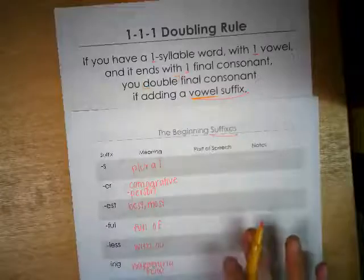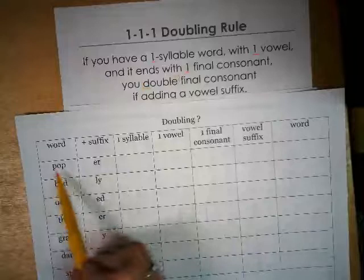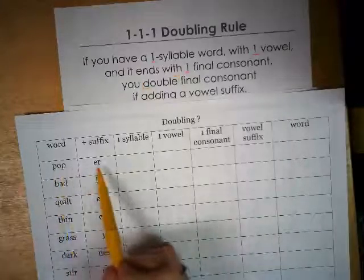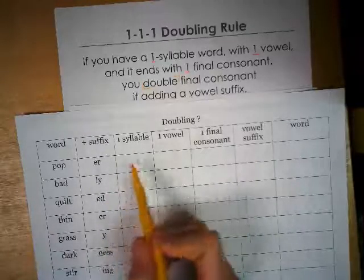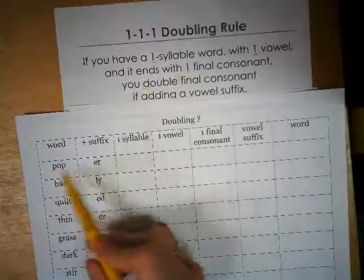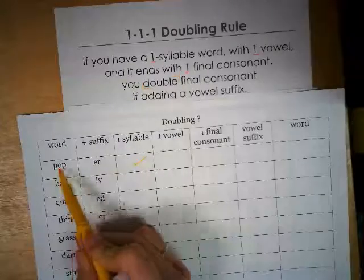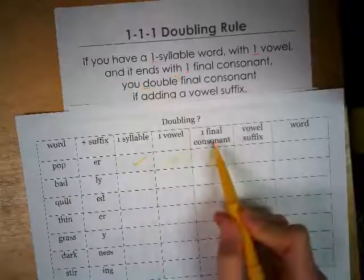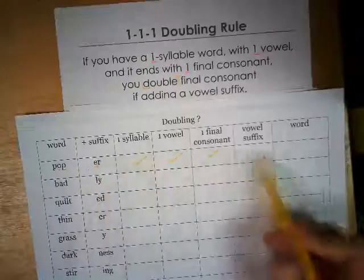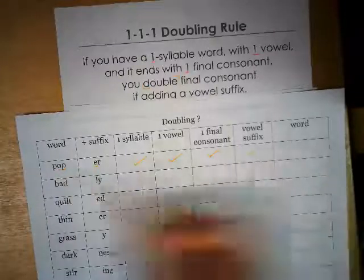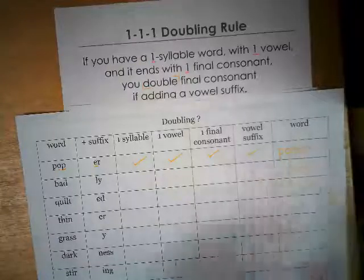We go through a little checklist. Our word is 'pop' and we're going to add 'er', which is a vowel suffix, so we have to possibly worry. Does the base word have one syllable? Pop has one syllable. Does it have one vowel? Yes, it has the O. Does it have one final consonant? Yes, P. And is it a vowel suffix? Yes, it is. So we are going to double that final P to make it say 'popper'.